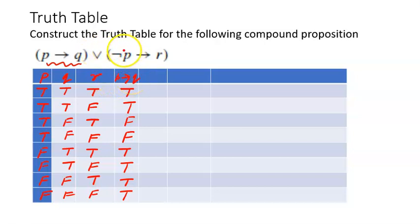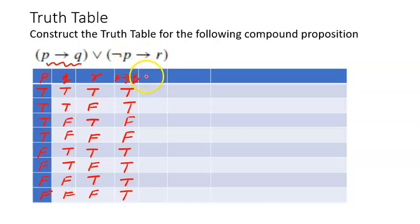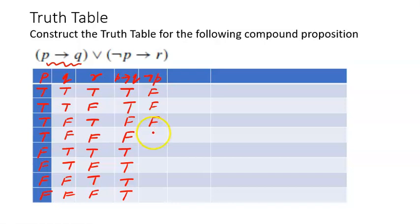Next we need negation of P, because this bracket requires the truth table of negation of P implies R. Let me write negation of P. The rows where P is true all become false, and the rows where P is false become true.